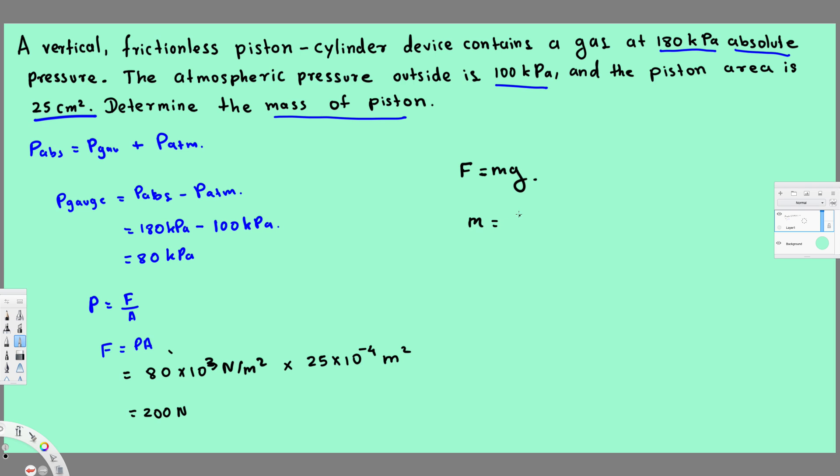We are trying to find the mass. Mass is equal to F over g. We found the force already: that is 200 Newton divided by 9.81 meter per second square. That's going to give us the mass. If you calculate that one, you will get 20.408 kilogram, and that is the answer for this question.